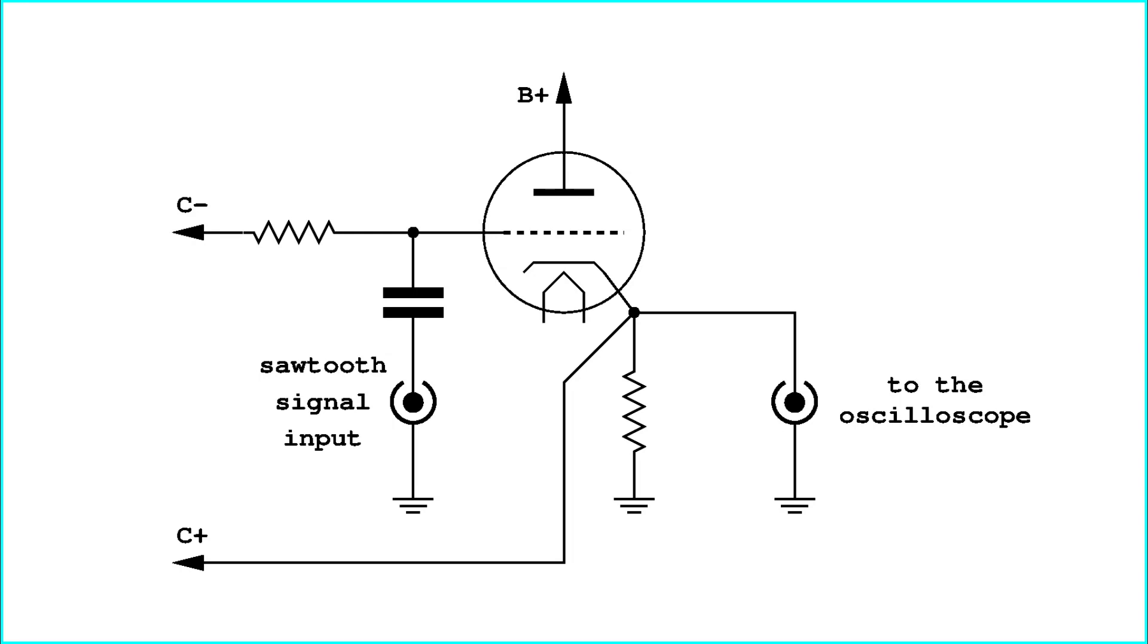Ideally, the oscilloscope should be connected directly, but a capacitor could be inserted as well to protect the scope, although that would increase the amount of noise that would appear on the screen.